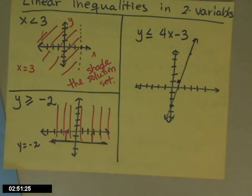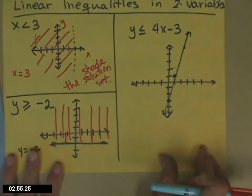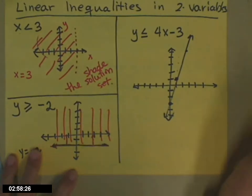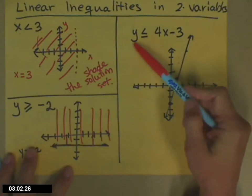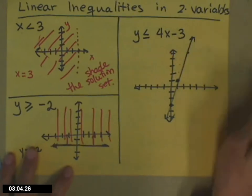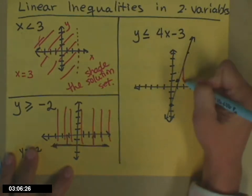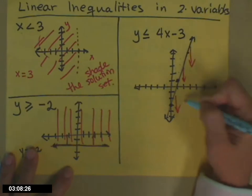And it's a solid line because it's less than or equal to. Now I have to decide where to shade. So I can decide either by looking at the inequality and saying, okay, I want the y's that are less than the y's on the line. So that means it's everybody down here.